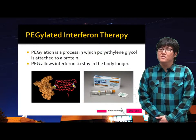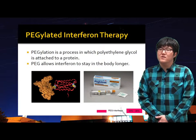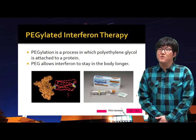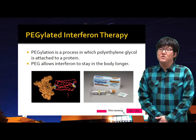Pegylation is a process in which polyethylene glycol is attached to a protein. This creates something like a shield around interferon, which delays the breakdown and clearance from the body by reducing immunogenicity. Since the PEG allows interferon to stay in the body longer, it shows greater suppression of the Hepatitis C virus.